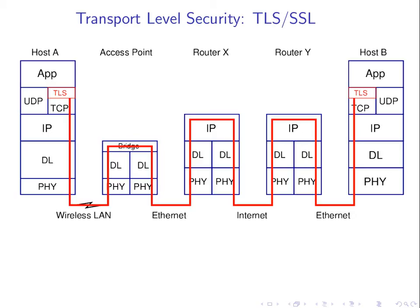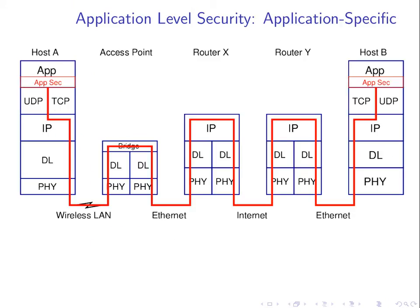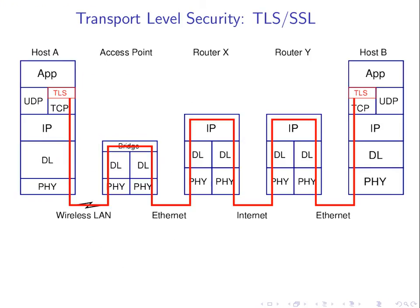Normally an application calls an API function like 'send data using TCP' and the operating system sends the data across the network — you as the programmer don't have to deal with TCP, it's done by the OS. If you're using transport layer security, you call a function like 'send data using TLS,' and then the operating system takes the data, does the encryption, performs all the security operations, and sends it using TCP. From the application development perspective it's much simpler — you don't need to implement the security, the OS does it for you.